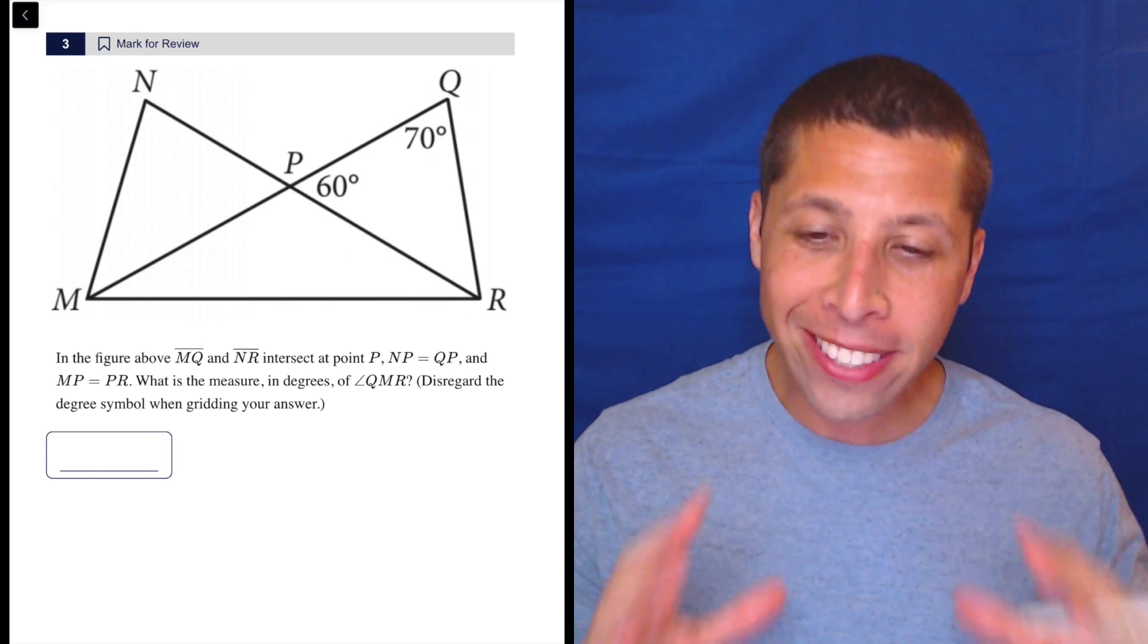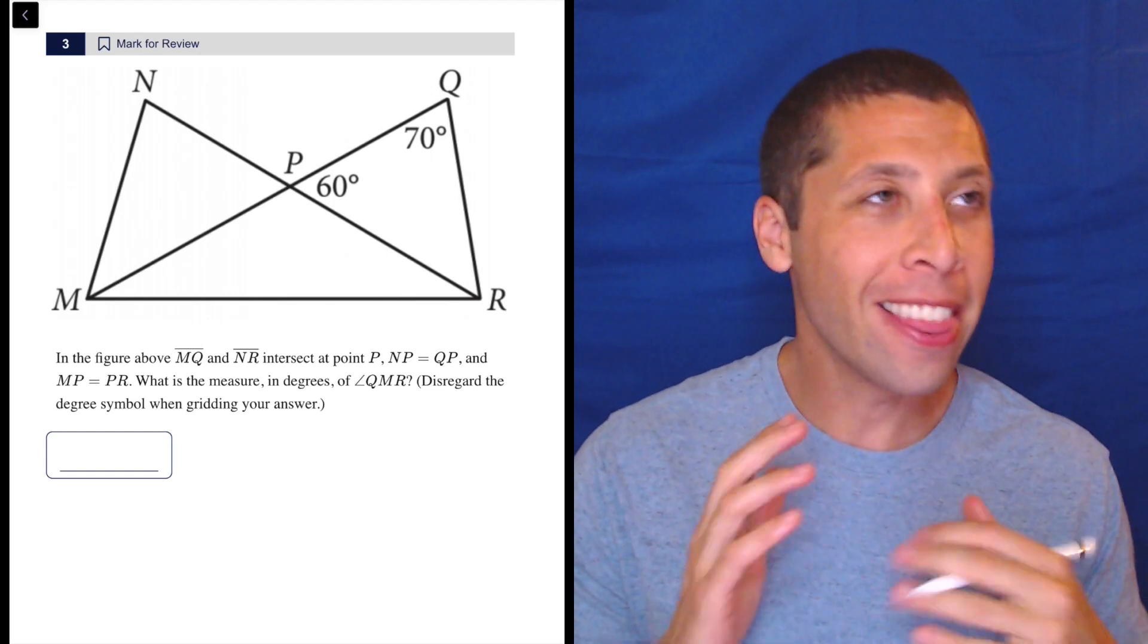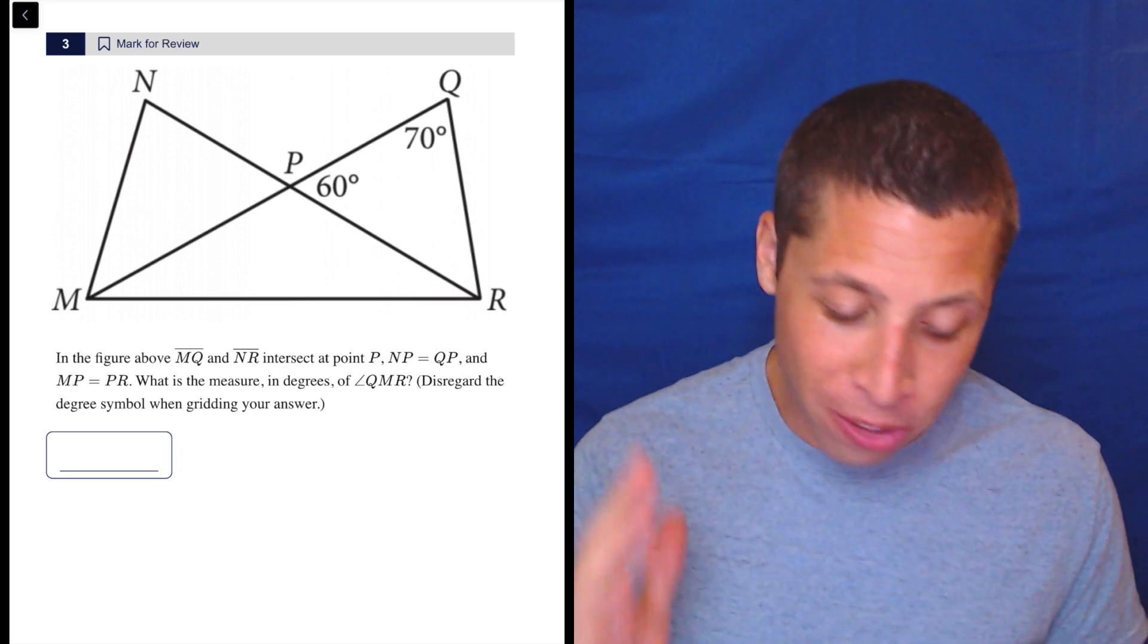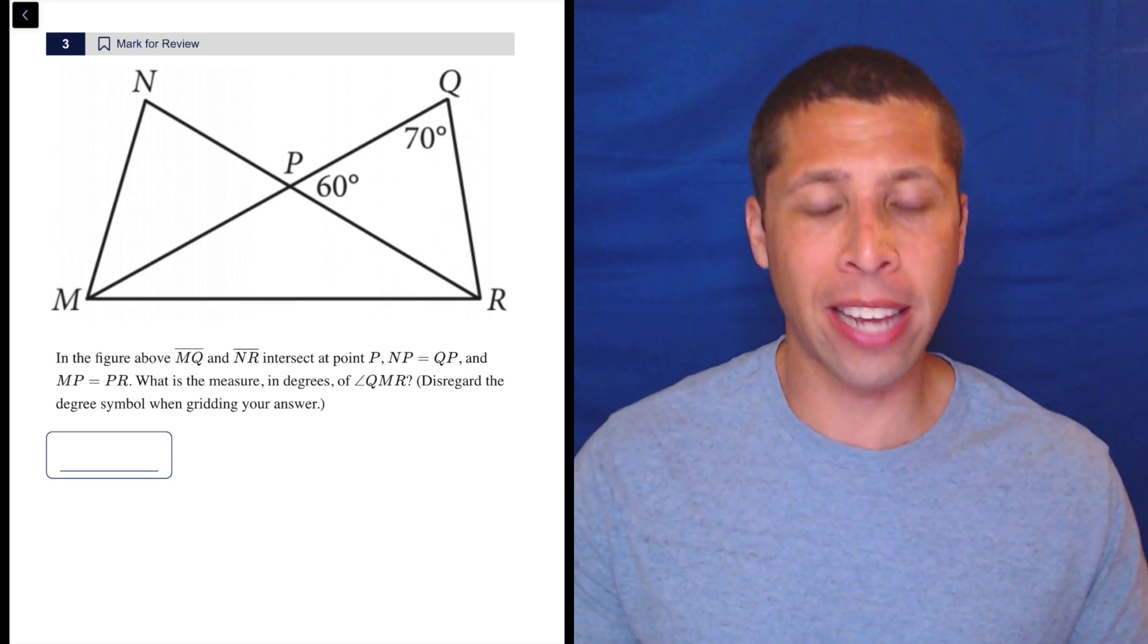For whatever reason, this kind of geometry question where we're just moving around a shape, putting angles on it, these things drive people nuts. My students get these wrong all the time. People think they're really hard. This is basic angle rules.